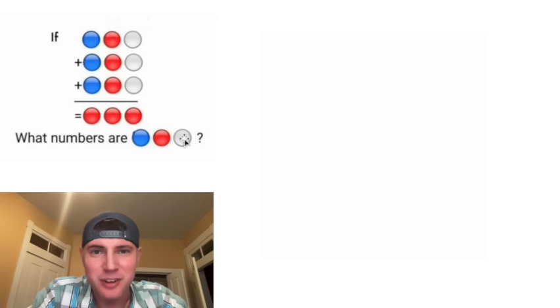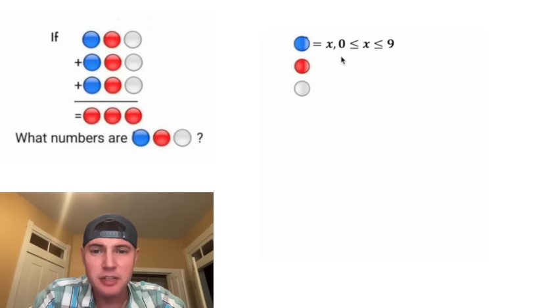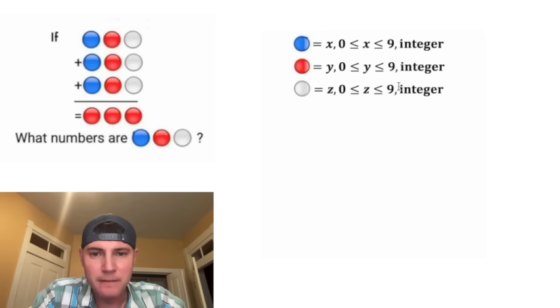So how are we going to get Wolfram Alpha to solve this for us? First, let's label the blue one x, and x is going to be defined between zero and nine because it's just a single digit, and we need it to be an integer. And same thing for red, we'll call it y, and we'll call the white one z. These are all going to be between zero and nine, and they have to be an integer.